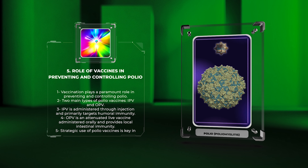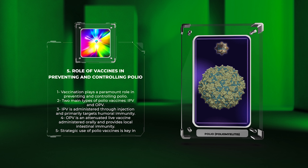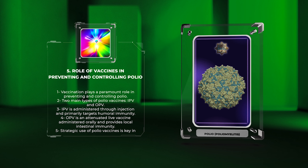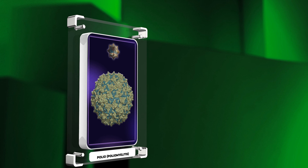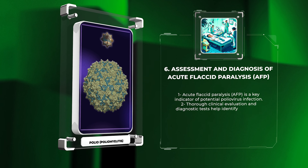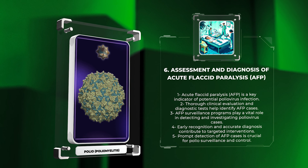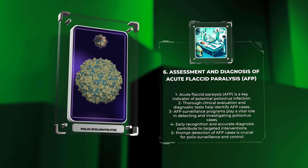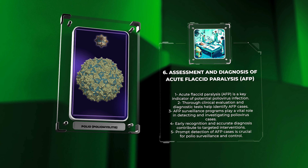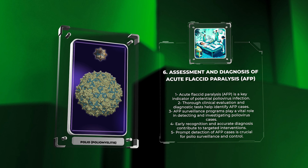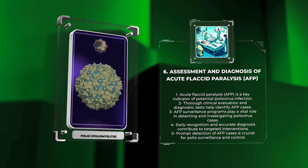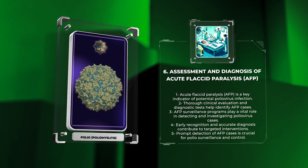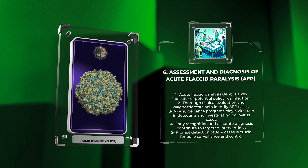Let's now shift our focus to the assessment and diagnosis of acute flaccid paralysis, AFP, an important indicator of poliovirus infection. AFP is a key indicator of potential poliovirus infection, presenting as a sudden onset of limb weakness or paralysis. Early identification and prompt detection of AFP cases are crucial for polio surveillance and control. Healthcare providers must conduct a thorough clinical evaluation, including a detailed history, physical examination, and neurologic assessment, to identify potential AFP cases.